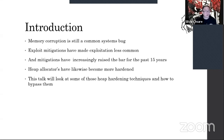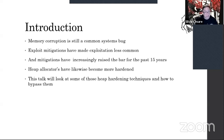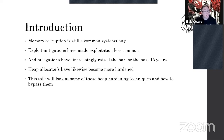Memory corruption has been predicted as dead every year for the past 15 years, yet it's still a very common bug in systems software. Exploit mitigations over the past 15 to 20 years have made exploitation less common than when everything was pretty much exploitable. Heap allocators — those responsible for dynamic memory management — have likewise become more hardened and secure. This talk will look at some heap hardening techniques in secure allocators, and attacks against them and how to bypass them.